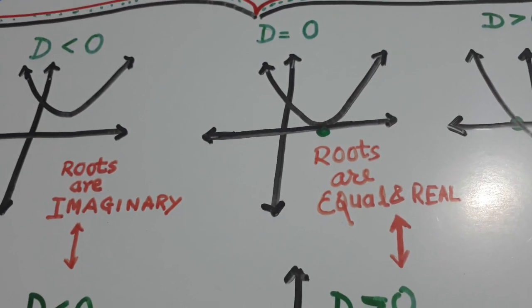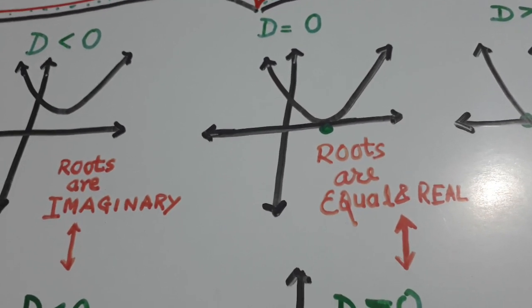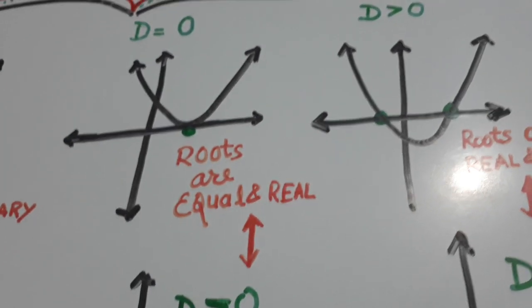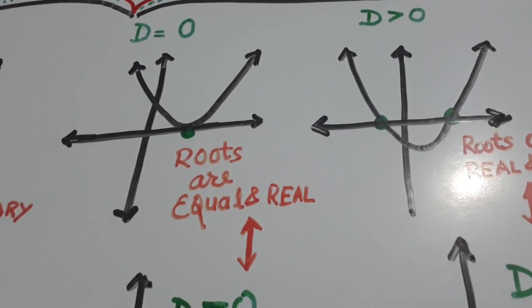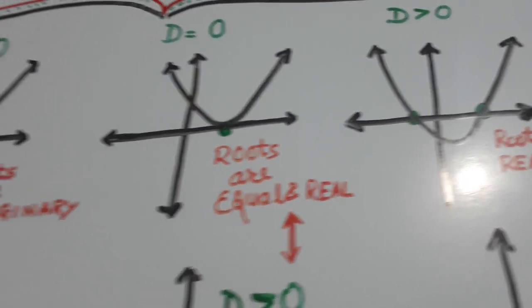D is equal to 0, it is touching at 1 point. And D greater than 0, 2 roots are there. It is touching x-axis at 2 points.